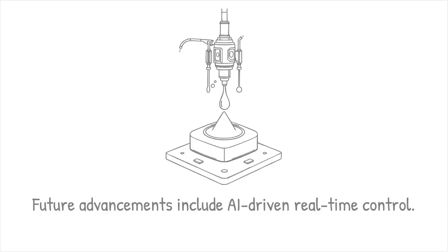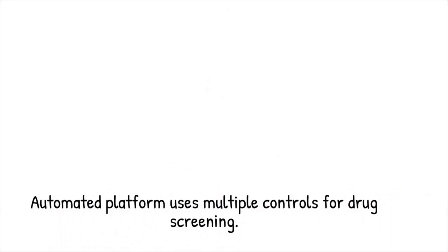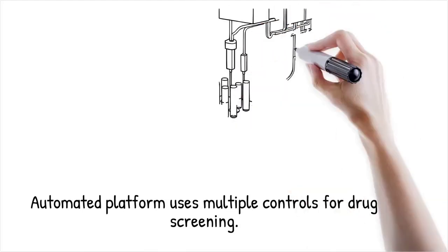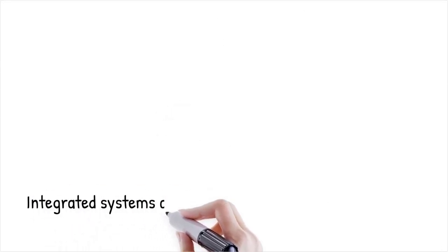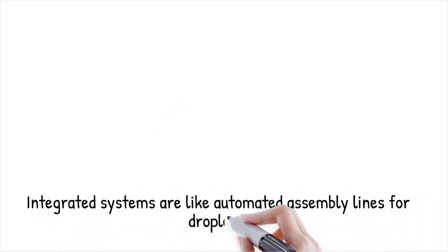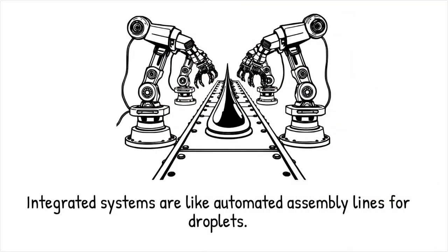An integrated microfluidic platform uses magnetic control for droplet sorting and optical methods for merging droplets in an automated drug screening assay. Integrated droplet systems are like a fully automated assembly line where different robotic arms perform specialized tasks in perfect coordination.